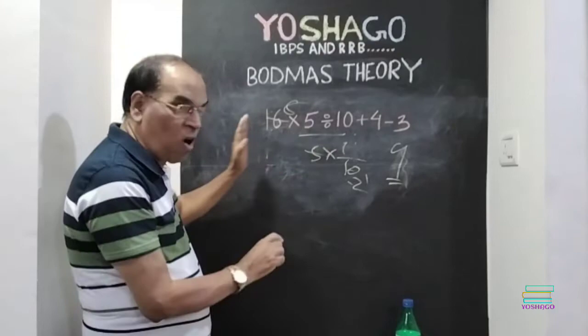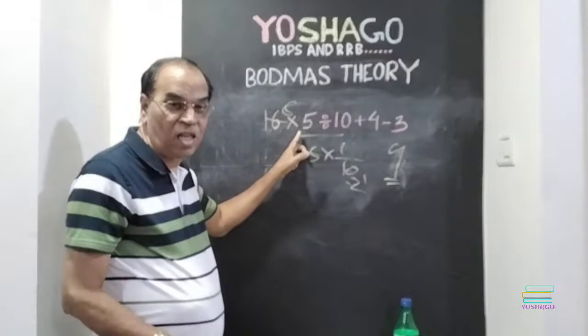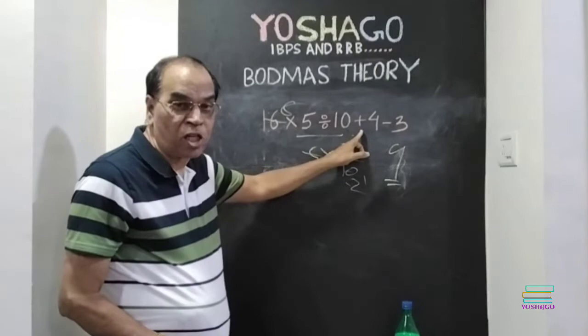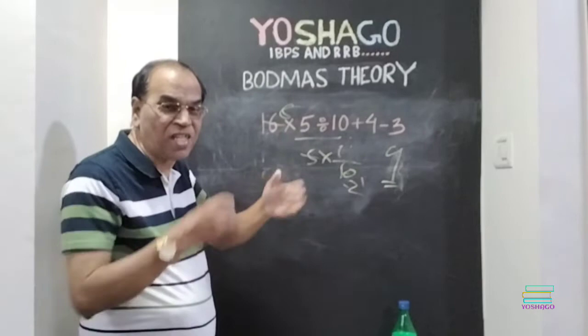Or, in this way also you can do, 16 to 5, 80. 18 divided by 10, 8. 8 plus 4, 12. 12 minus 3, 9. This is the answer. This is the easy way. In some BODMAS, you will find it very easily.